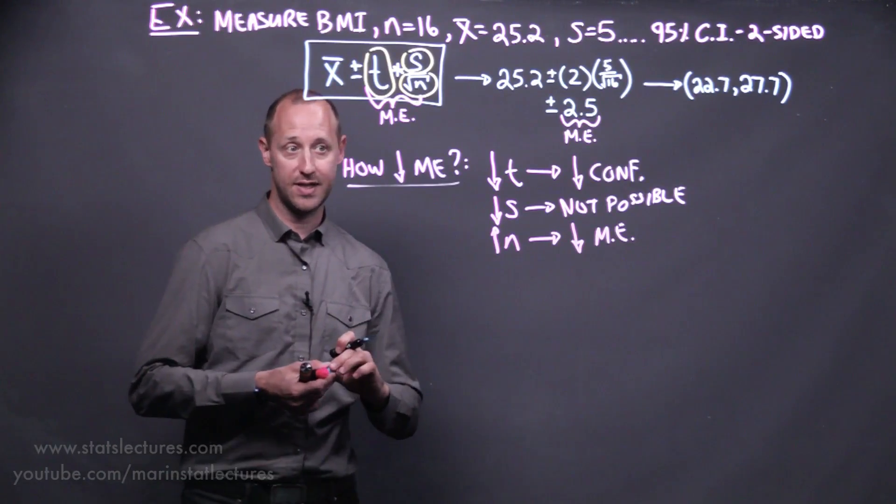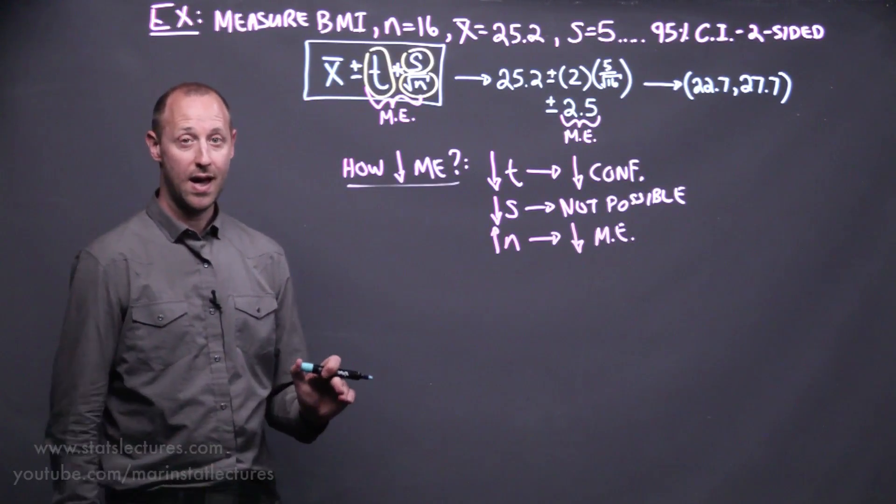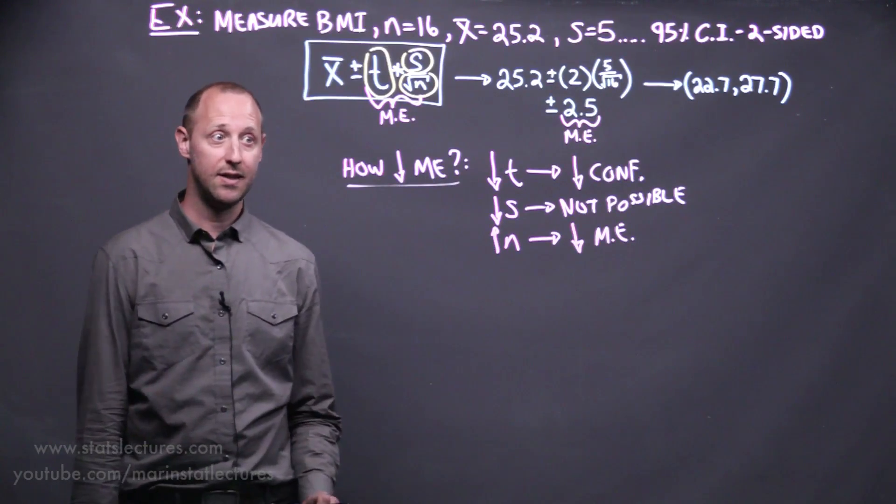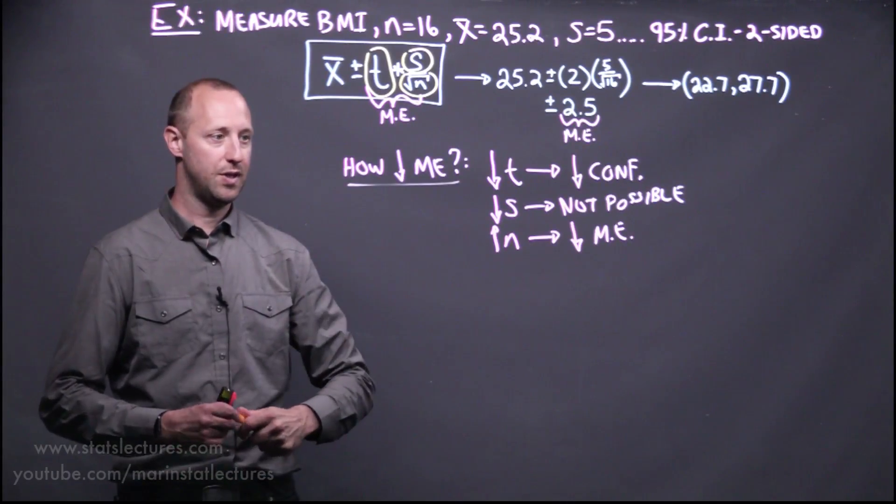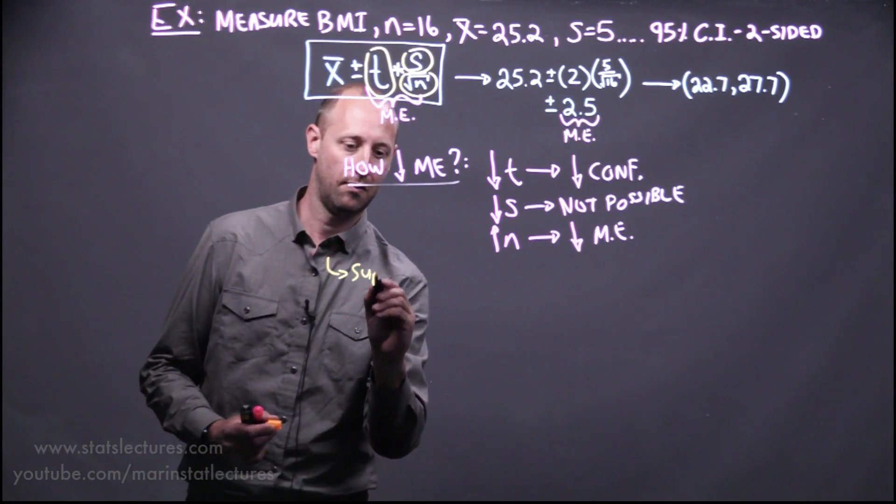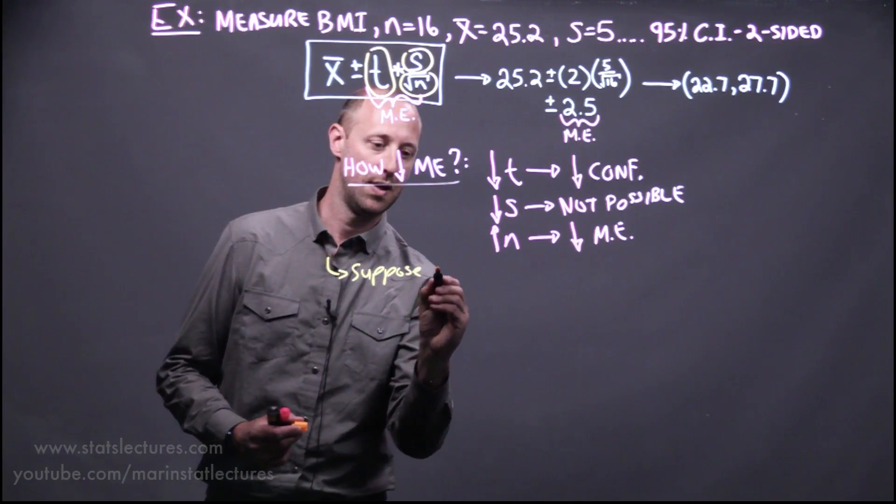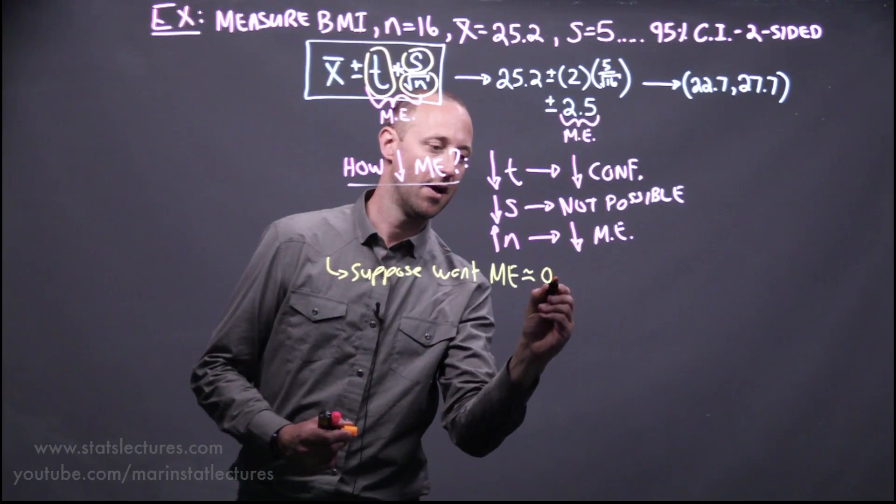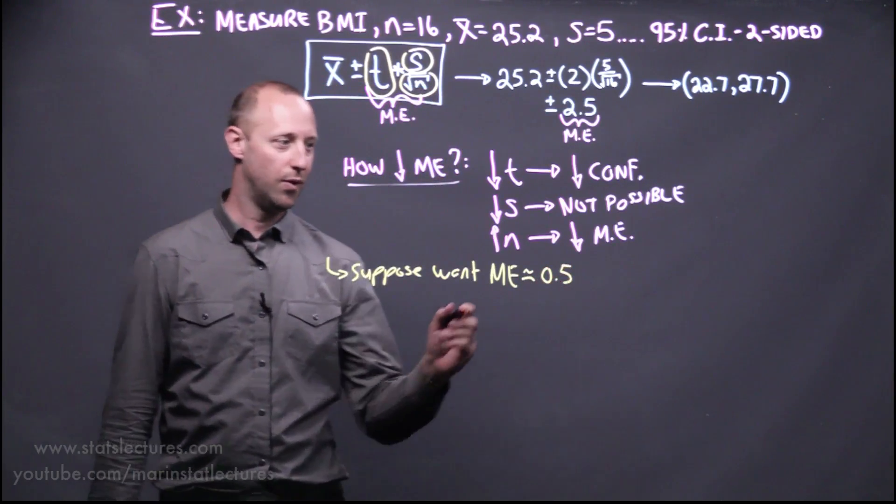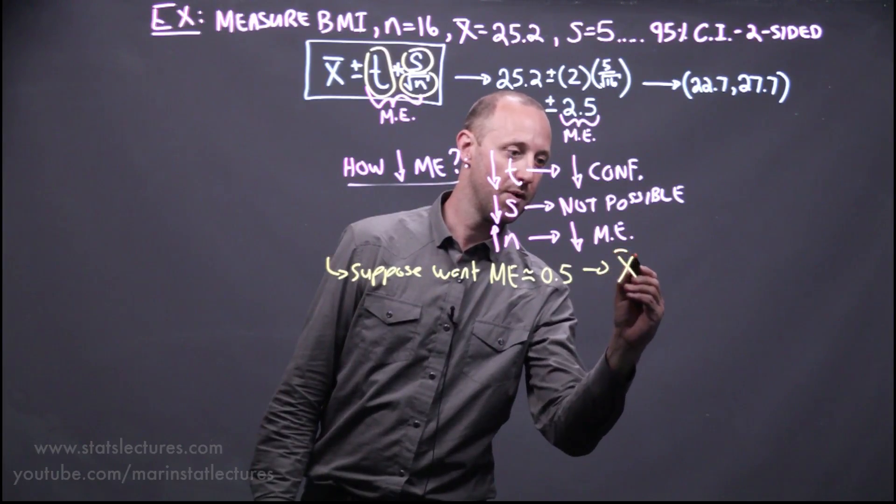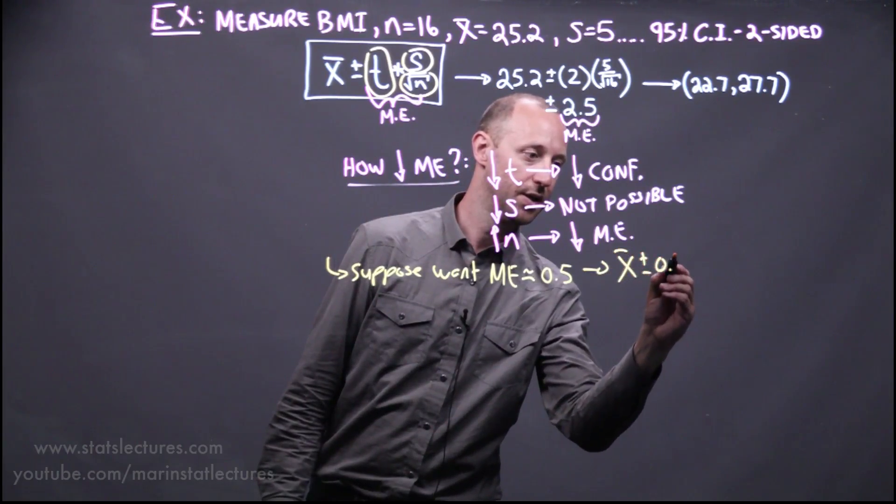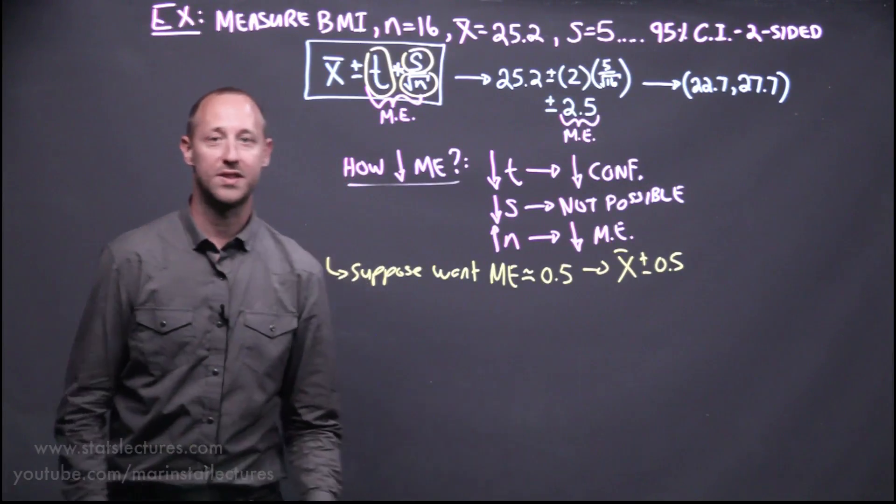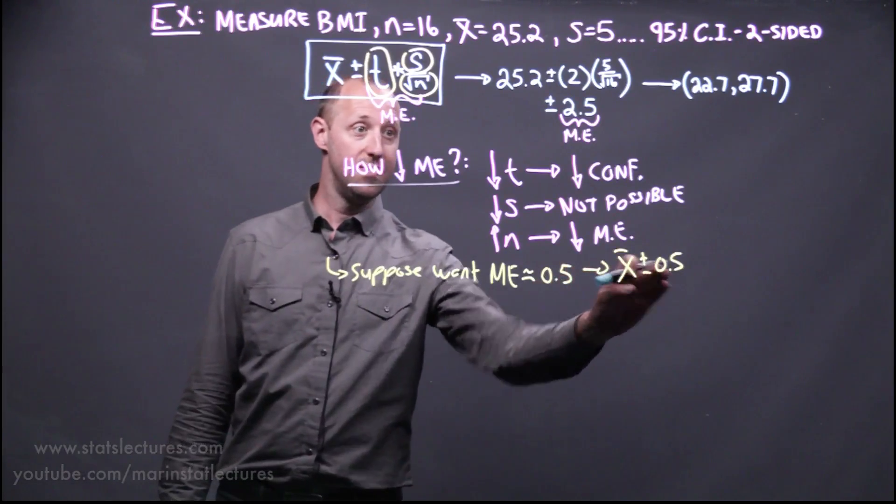So let's just work through an example. We're going to see how we can choose the margin of error that we want and determine what sample size is needed in order to get that margin of error. So let's suppose that we want a margin of error of roughly 0.5, or in other words, we want our confidence interval to go from our estimate plus or minus 0.5.